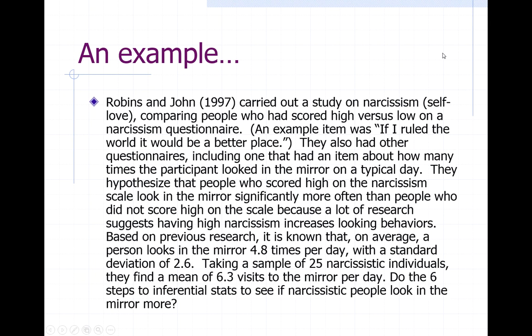Robbins and John carried out a study on narcissism, comparing people who scored high versus low on a narcissism questionnaire. An example item was: 'If I ruled the world, it would be a better place.' They also had a questionnaire item about how many times the participant looked in the mirror on a typical day. They hypothesized that people who scored high on the narcissism scale look in the mirror significantly more often, because research suggests high narcissism increases looking behaviors. Based on previous research, a person looks in the mirror 4.8 times per day with a standard deviation of 2.6. Taking a sample of 25 narcissistic individuals, they find a mean of 6.3 visits to the mirror per day.